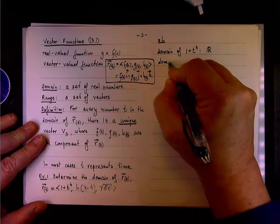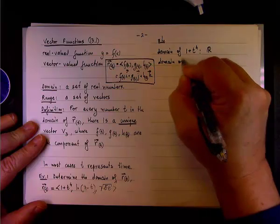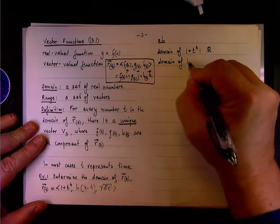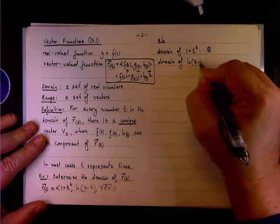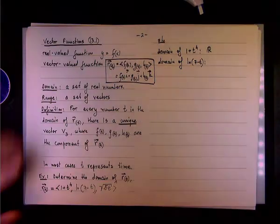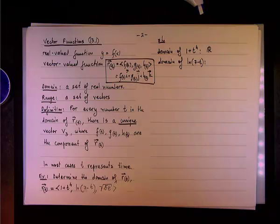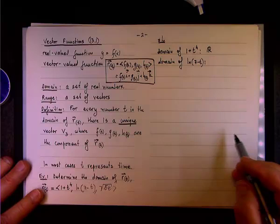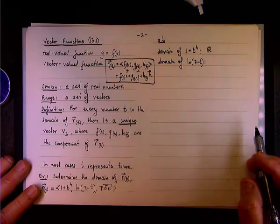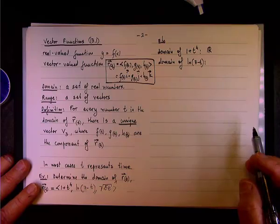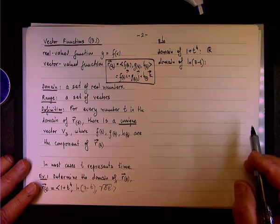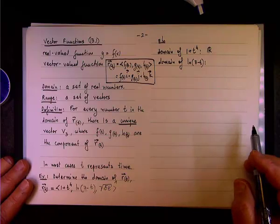Then we look at the second component, the domain of the natural log of 7 minus t. What are the restrictions here? Can it equal 7? No, natural log of 0 does not exist.